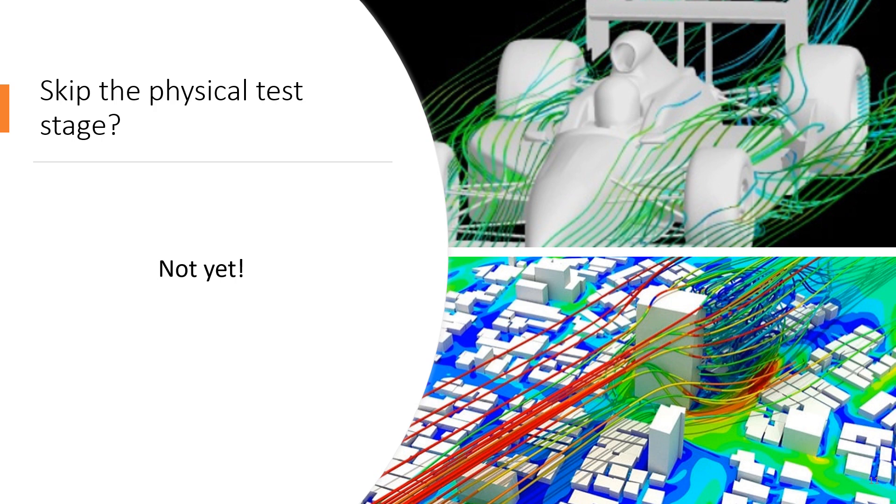The OC5 project, led by Amy Robertson, shows that all the engineering tools that were tested under-predicted the ultimate and fatigue loads. And the simple fact is that we don't have enough real-world experience with prototypes out in the ocean. There just isn't enough data publicly available, which could be used as a benchmark for floating wind designs.